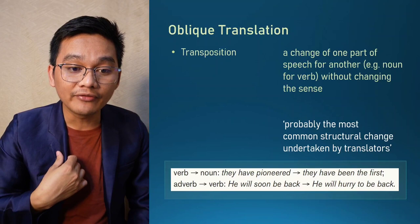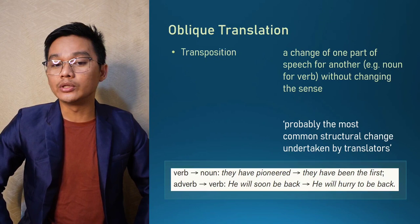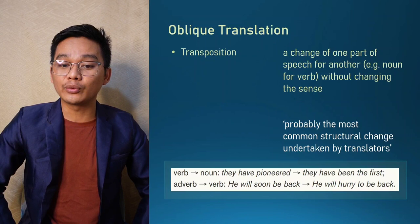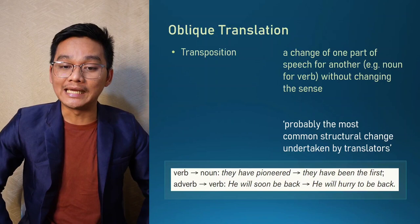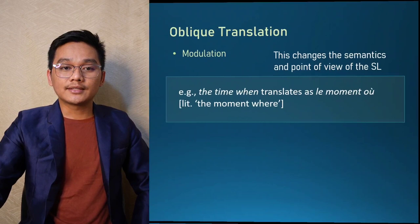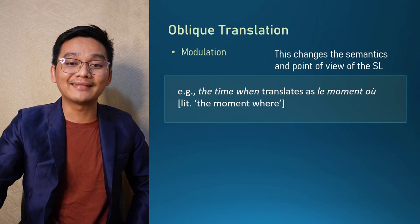Another example of transposition: an adverb in the source text becomes a verb in the target language. For example, 'he will soon be back' — here 'soon' is an adverb — but in the translated text it becomes a verb: 'he will hurry back,' where 'hurry' is a verb.